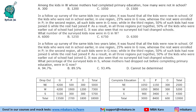This is the table which has the separated values — the given table and what we calculated. Northeast, West, South with G, P, O columns — these are the figures for students whose mothers completed education. The next question asks: among kids in W whose mothers had completed primary education, how many were not in school? Looking at the second table, not in school are 300 students.